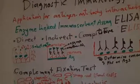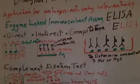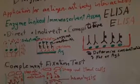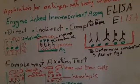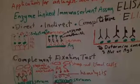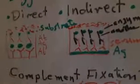For example, enzyme-linked immunosorbent assay or ELISA. ELISA is a qualitative method and a quantitative method for detection of antigens or antibodies. Types of ELISA are direct ELISA.